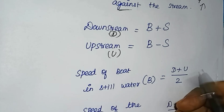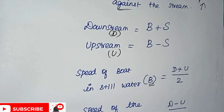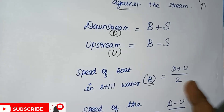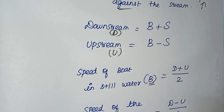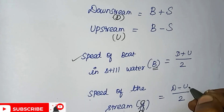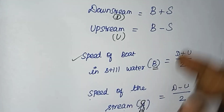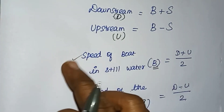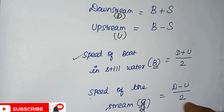We denote the speed of the boat in still water as B. This is a very important formula. The speed of the stream is downstream minus upstream divided by 2. The speed of the boat in still water is D plus U divided by 2. The speed of the stream is D minus U divided by 2.